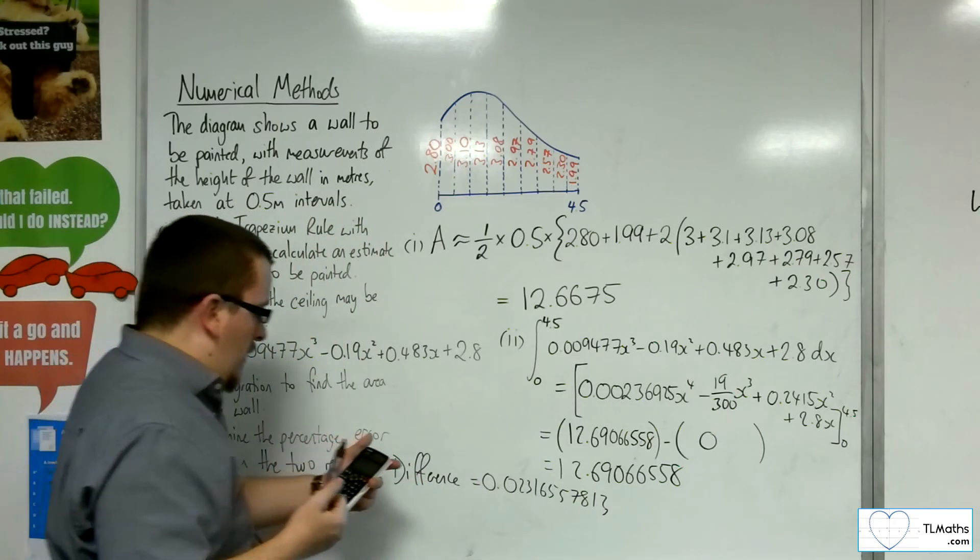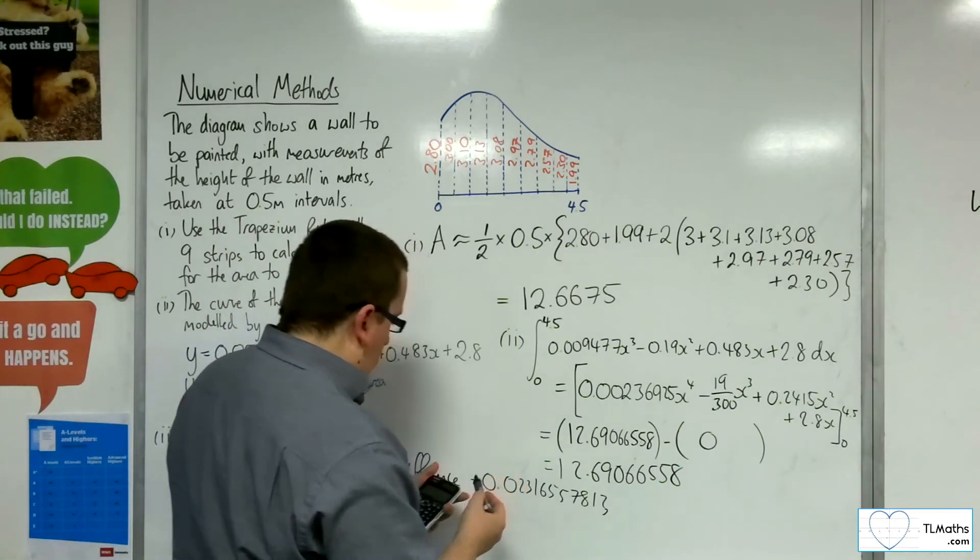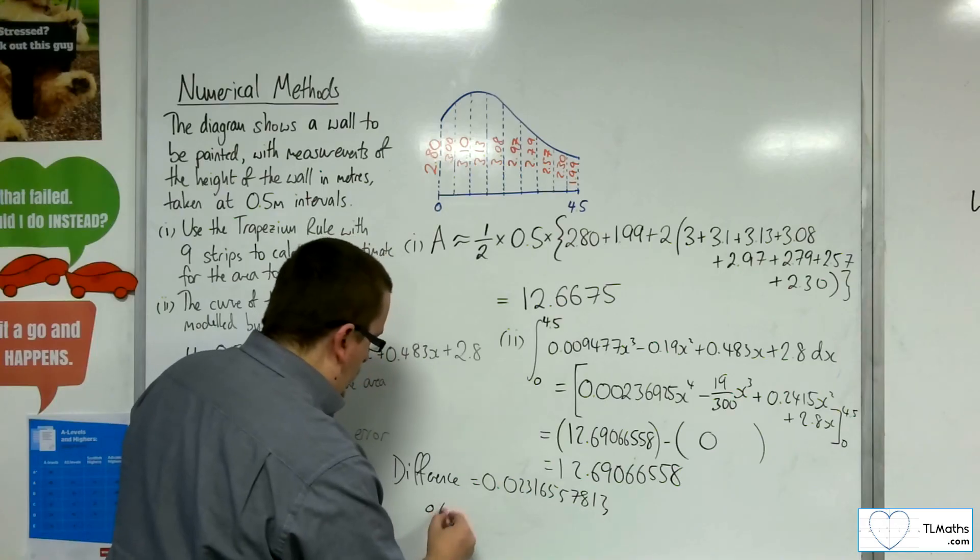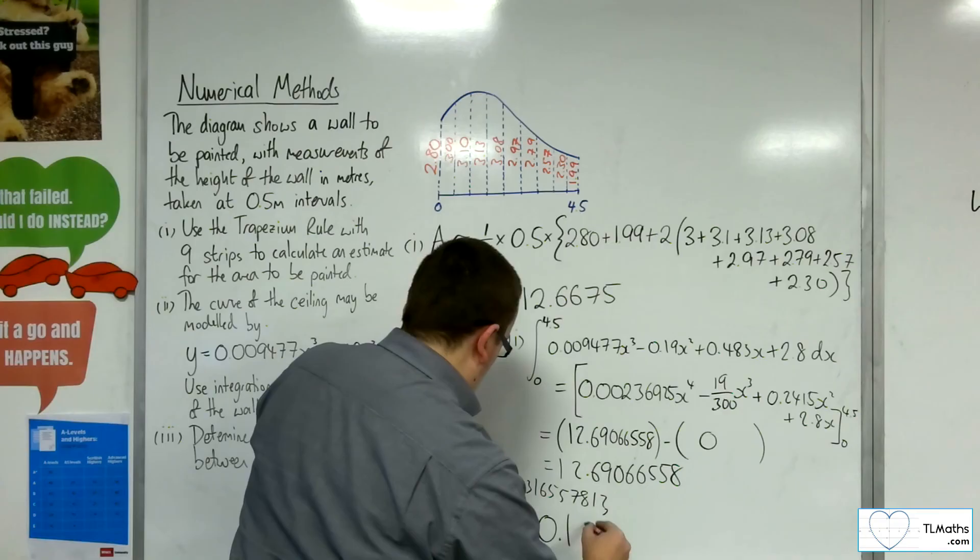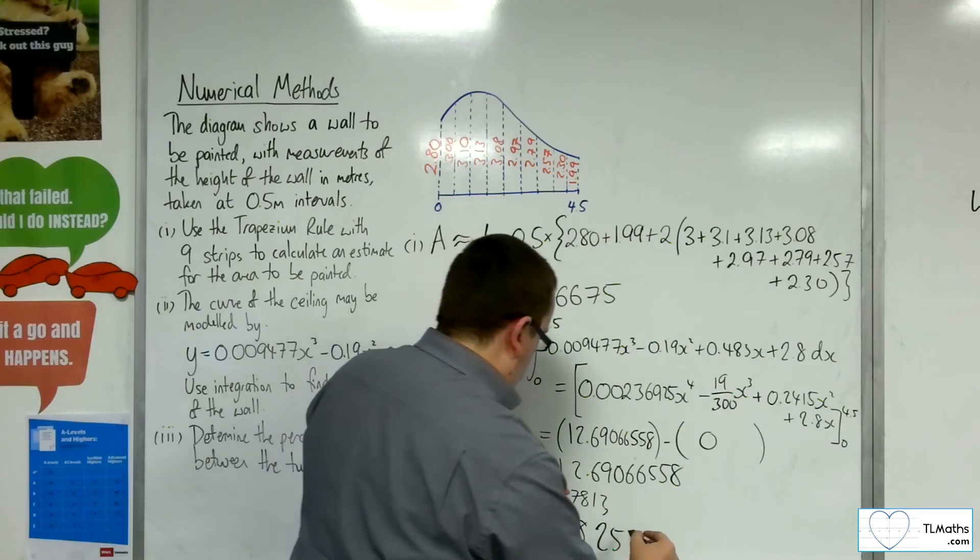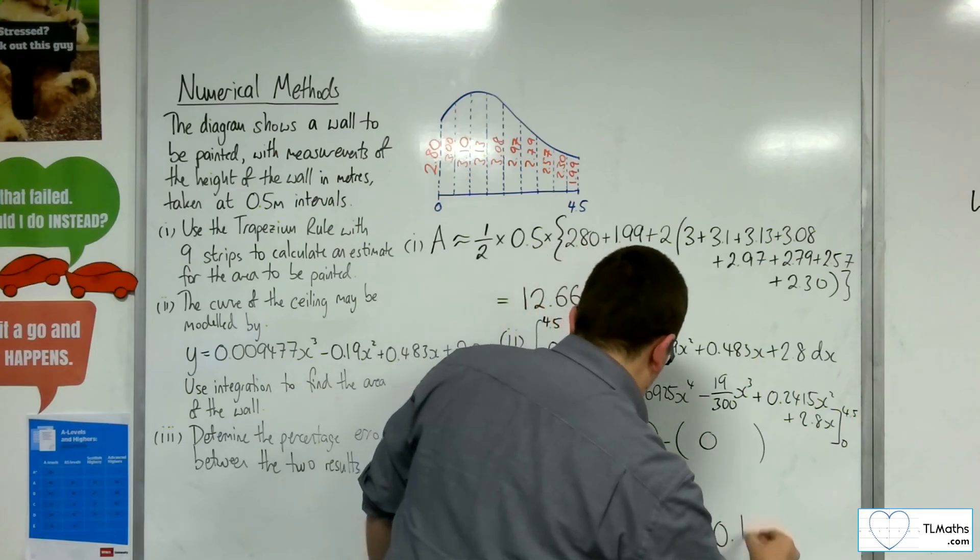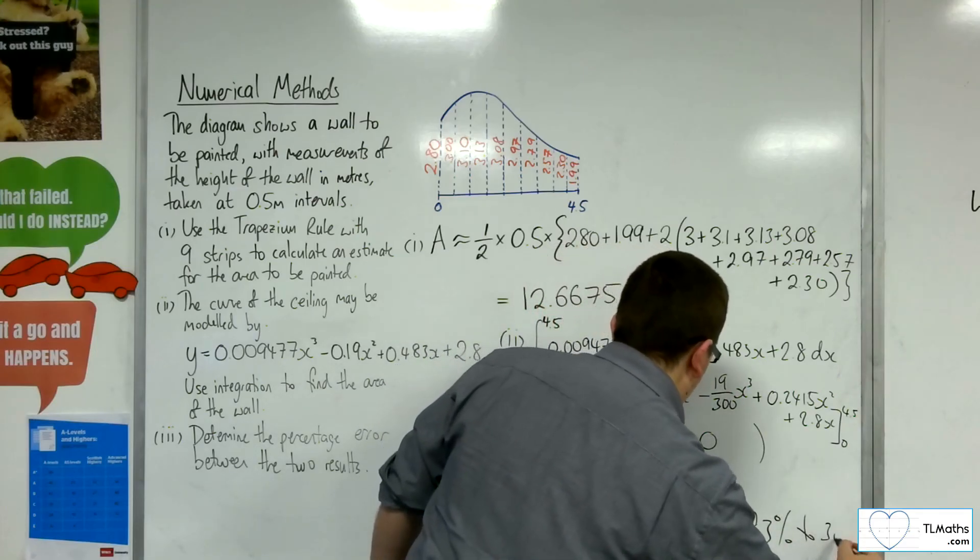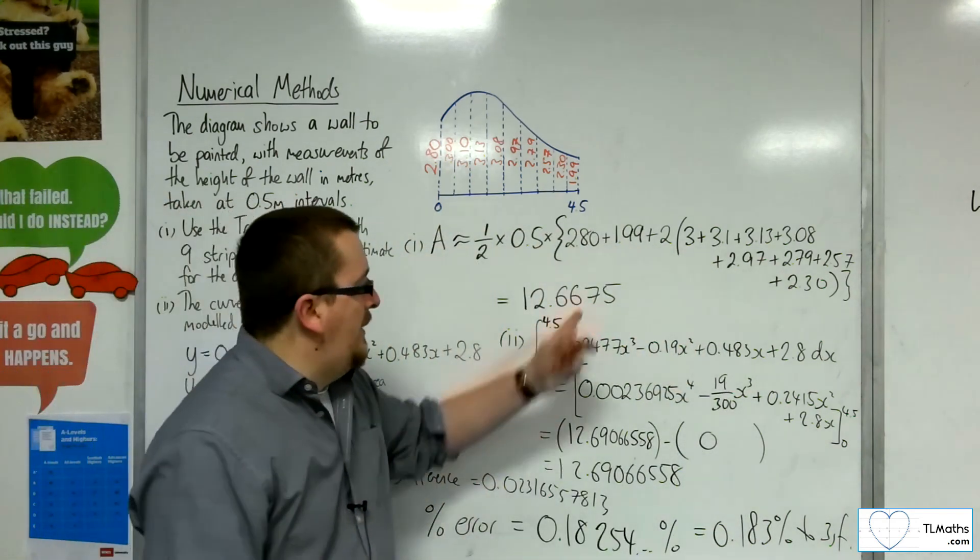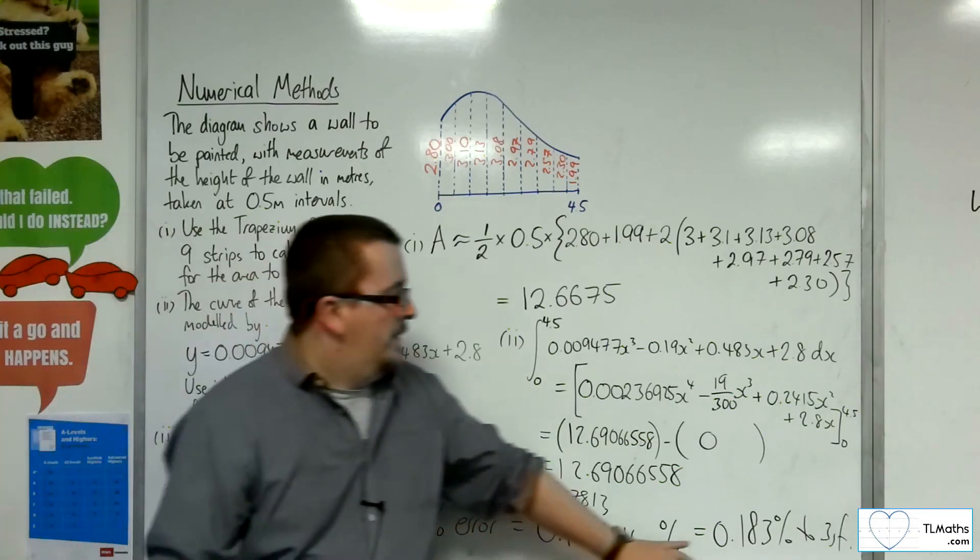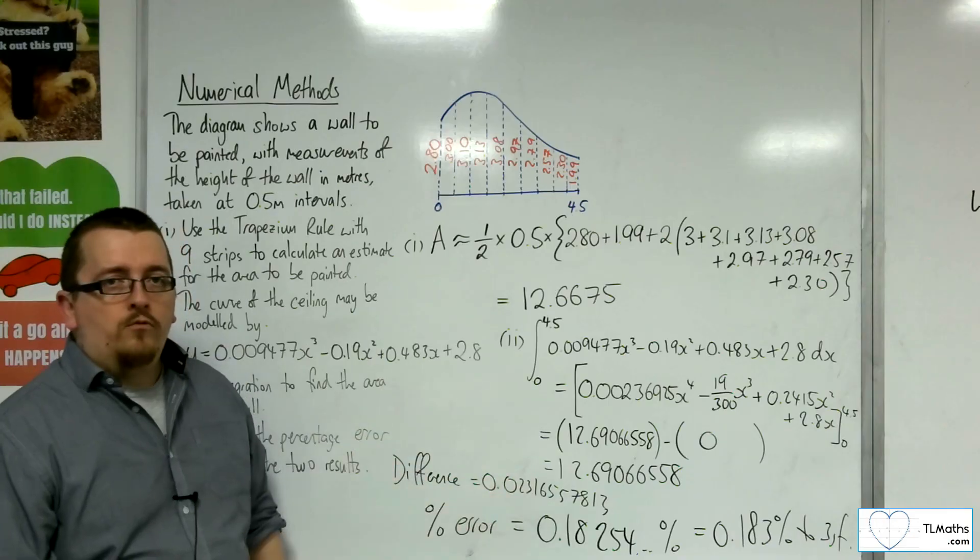I'm getting 0.1825, so the percentage error is 0.18254 percent. So 0.183% to 3 significant figures. My trapezium rule estimate is 0.183% off the accurate result.